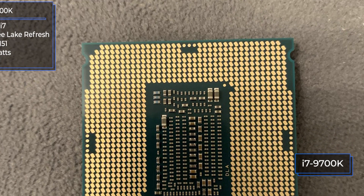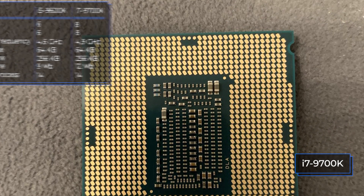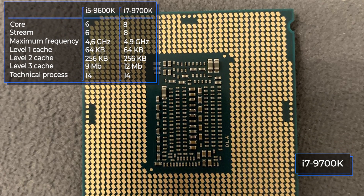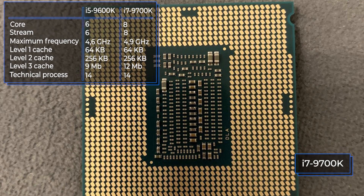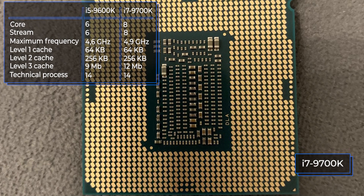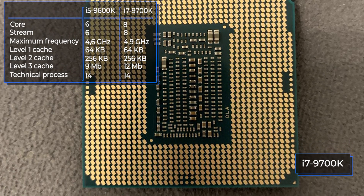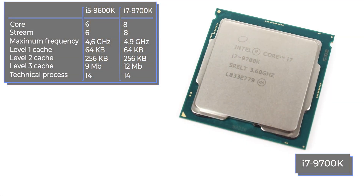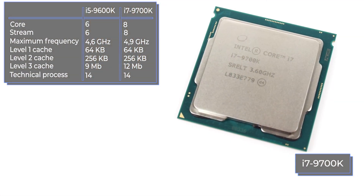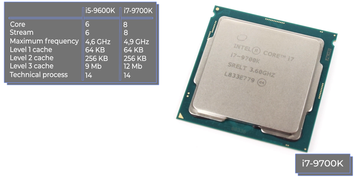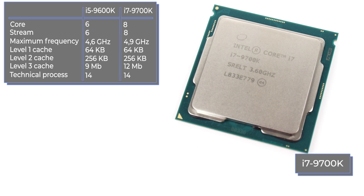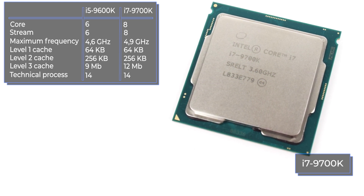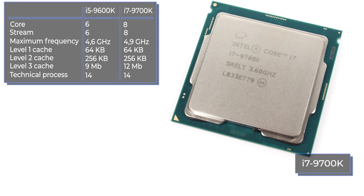The main difference between the models is in their number of cores. Both processors don't have multi-threading. The 9700K version has two cores more than its competitor. The Turbo Boost allows you to accelerate the processor by 300 MHz, which is 7% higher than the 9600K model.